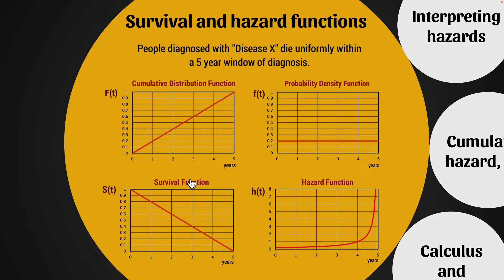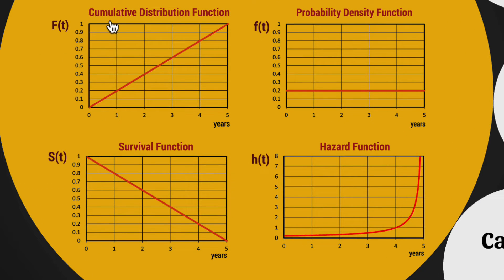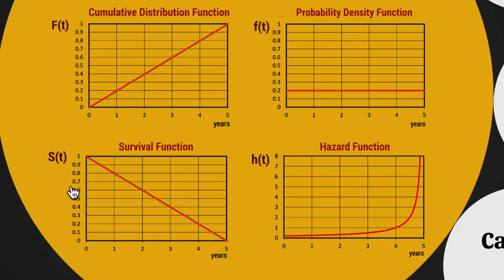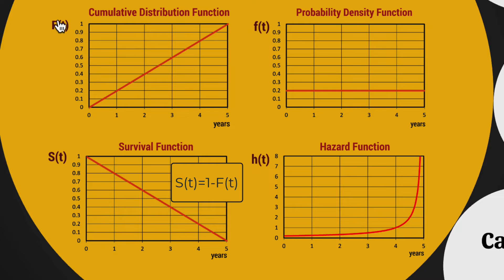Now we get to the survival function, which is almost like the reverse of the cumulative distribution function. The CDF shows what proportion of people have died at a certain number of years from diagnosis — at two years, 40% have died. The survival function tells us how many people have survived. At the exact time of diagnosis, 100% of people have survived. After two years, the survival function gives us 0.6, meaning 60% of people have survived. So it is simply one minus the cumulative distribution function.